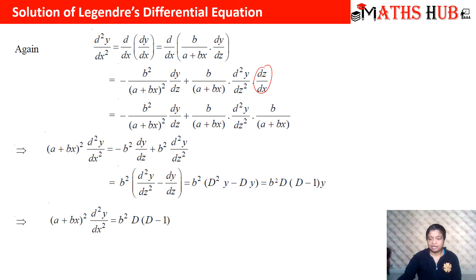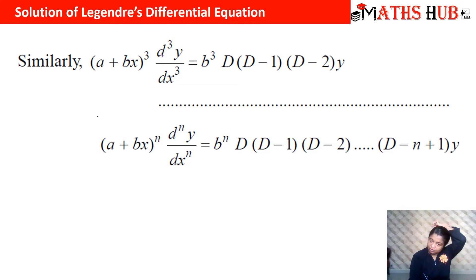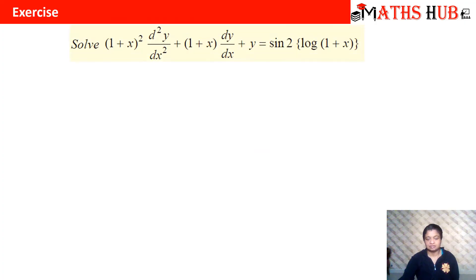Likewise, the general formula is: (a+bx)^n · d^n y/dx^n = b^n · θ(θ−1)(θ−2)···(θ−n+1) · y. So for the cube term: (a+bx)³ · d³y/dx³ = b³ · θ(θ−1)(θ−2) · y. Based upon this method, let's try to solve a question.